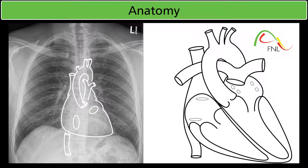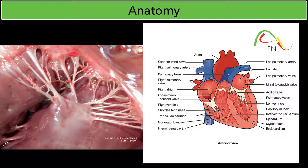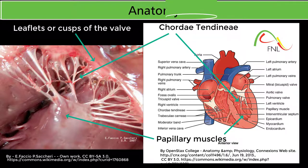The chordae tendinae, which literally means tendinous cords, are thin fibrous cords of connective tissue resembling strings that connect the leaflets of the mitral valve to the papillary muscles.